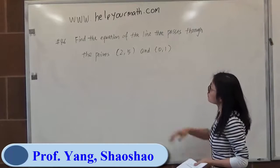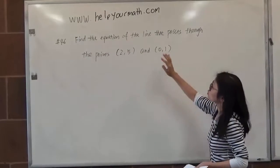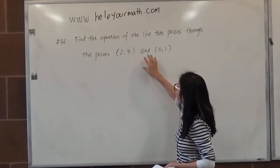We have a question here today for finding the equation of the line that passes through the point (2,5) and (0,1).